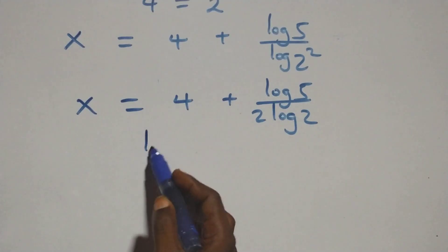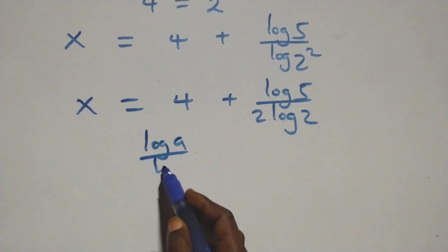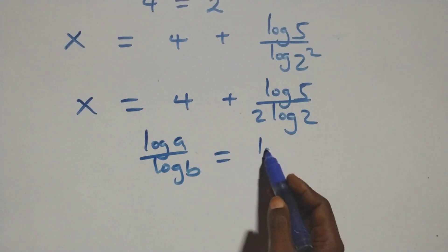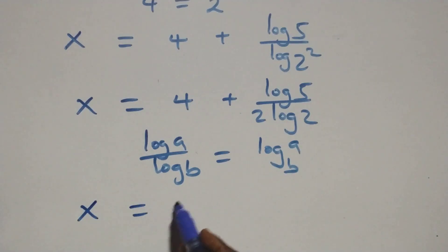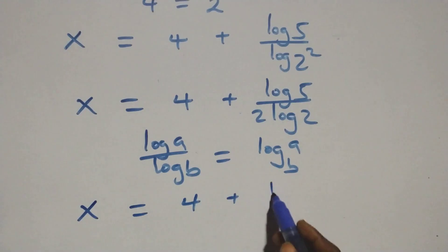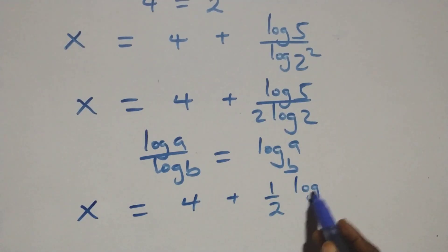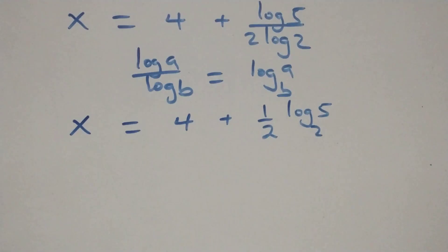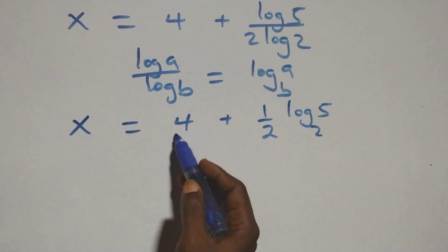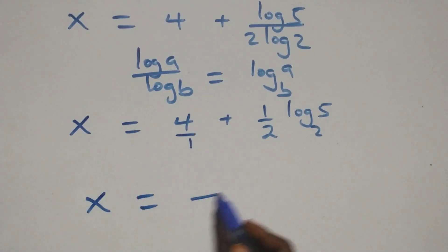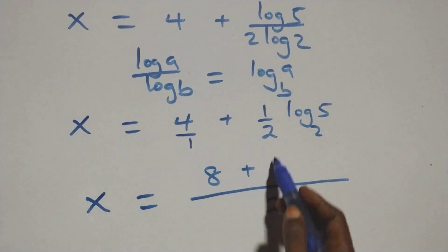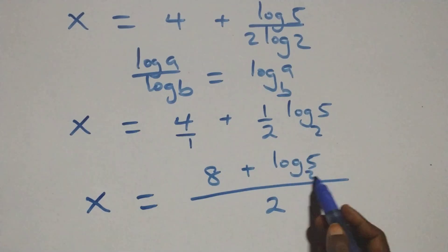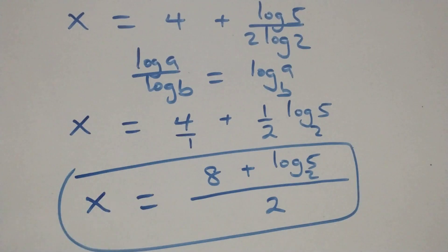We apply the change of base formula. When we have log A over log B, this is the same as log A to base B. And we have x equals to 1 plus one-half times log 5 base 2, which gives x equals to 4 over 1. Here, 4 times 2 becomes 8, then plus log 5 base 2. That is, the value of x is 8 plus log 5 base 2 all over 2.